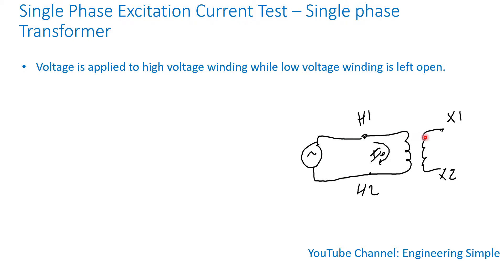So as you can see here, the single phase transformer, here's the high side, here's the low side. So the high side, you apply voltage, which would allow the core to be excited. And the low voltage winding is left open.